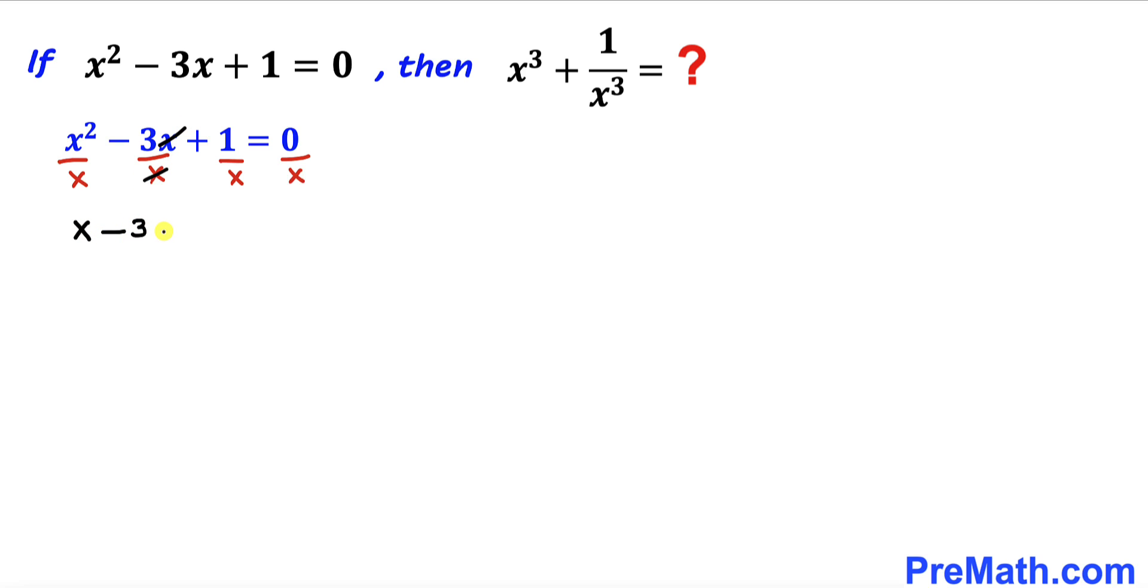We ended up with just negative 3 plus 1 divided by x equal to 0. Now let's go ahead and move this negative 3 on the other side. So therefore we ended up with x plus 1 divided by x equals to positive 3.